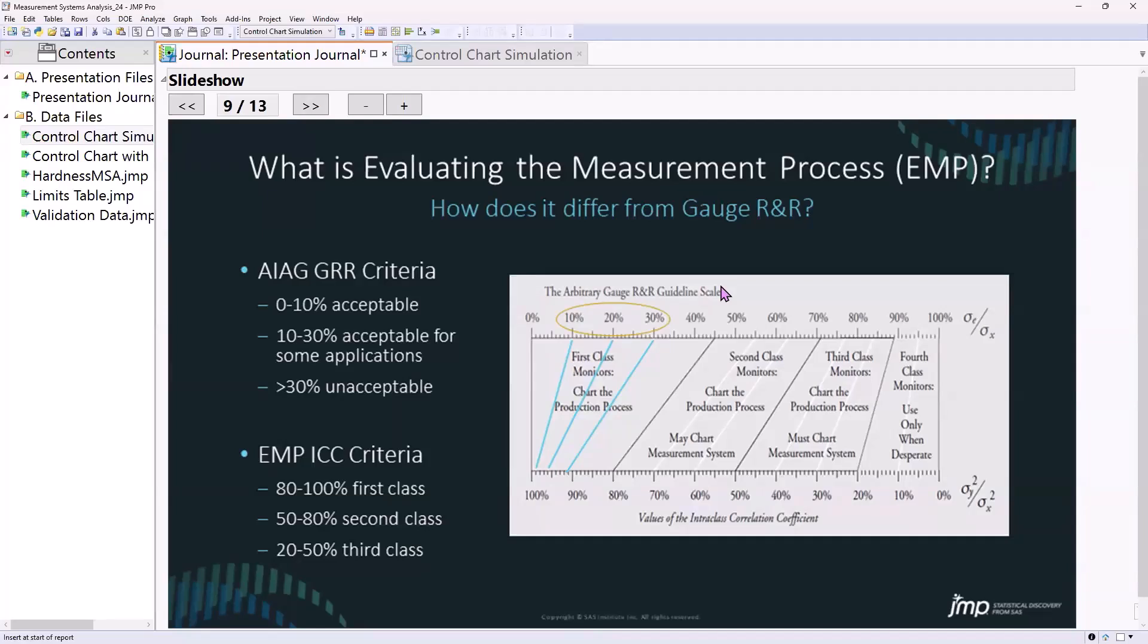I had a gauge that measured out at 30% R&R, though it was actually a very effective measurement tool in my industry. All of the customers that I worked with, as well as other engineers, had a lot of comfort with this gauge, and it was actually an effective way to develop products.